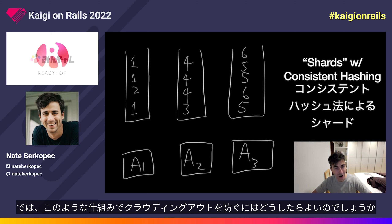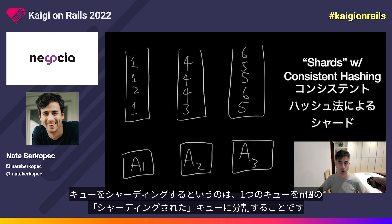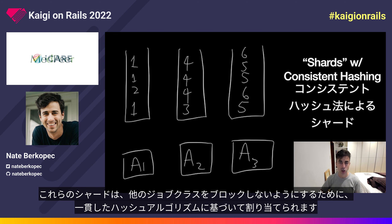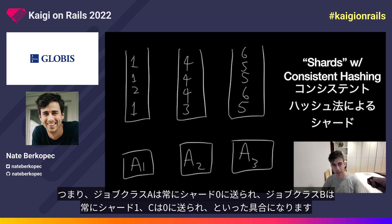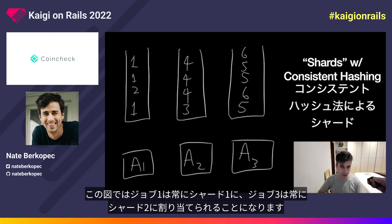How do you prevent crowding out in this scheme? My colleague Kelly Sutton came up with sharding at Gusto. The idea of sharding a queue is to split one queue into N sharded queues. For each job you would assign to a queue, a client-side middleware instead assigns it to one of N shards named QA0, QA1, and so on. These shards are always assigned on a consistent hashing algorithm, so job A always gets sent to shard 0, job B always to shard 1, and so forth. That means a single job class will only crowd out one of these shards and not all of them at once.